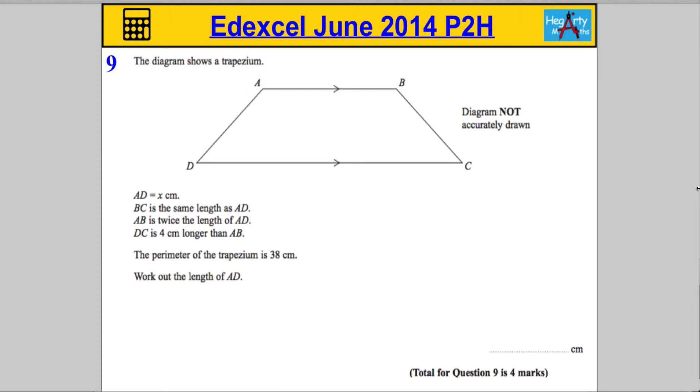Question 9. The diagram shows a trapezium ABCD, and we're told that the length AD from A to D is X, so I'm going to write that on the diagram.